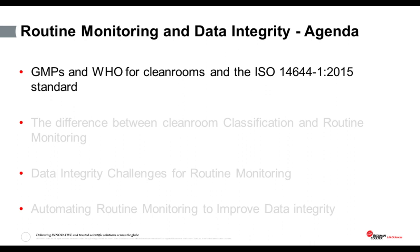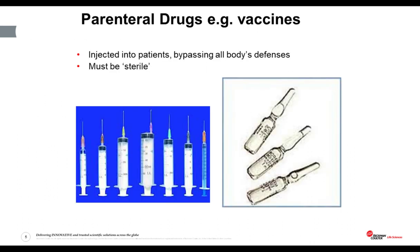First of all, let's take a look at the GMPs, the World Health Organization guidance for clean rooms, and the ISO standard. We're all aware of the search for the COVID vaccine, and the pharmaceutical industry is racing to find the best solution. Vaccines are delivered by injection, like many pharmaceutical products, and any parenteral or injectable drug is the biggest risk if contaminated, because if injected, they bypass our defenses.